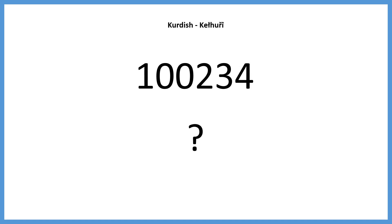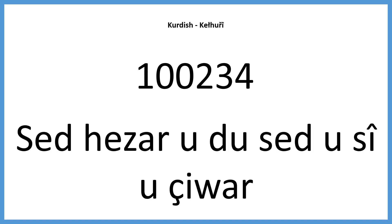Our final example will be a much larger number: hundred thousand two hundred and thirty-four. You may pause the video here. This number would be: se hezaar u du sed u si u chuar. Se hezaar — hundred thousand. U — and. Du sed — two hundred. U — and. Si u chuar — thirty-four. Se hezaar u du sed u si u chuar.